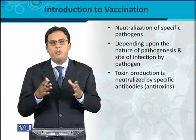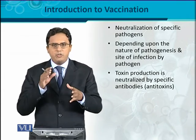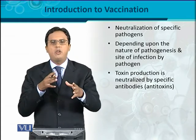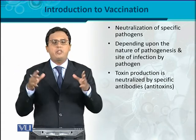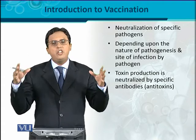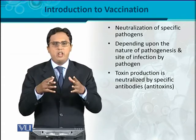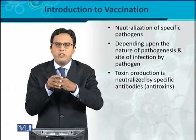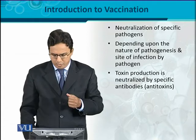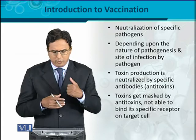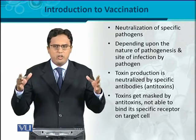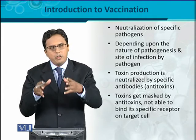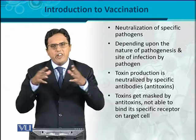Toxins are poisonous substances produced by certain pathogens. After being released, they can damage the host cell. For this purpose, the neutralization process is effective: if you generate antibodies against those toxins, the toxins act as antigens and specific antibodies will bind and mask their effect. The toxins get masked by antitoxins and are no longer able to bind to specific receptors on the host cell, thereby preventing infection or disease.